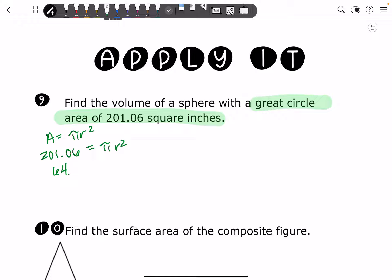So we can just say 64 is equal to R squared. In order to find that radius, you're going to take the square root of both sides. And that means your radius is 8.